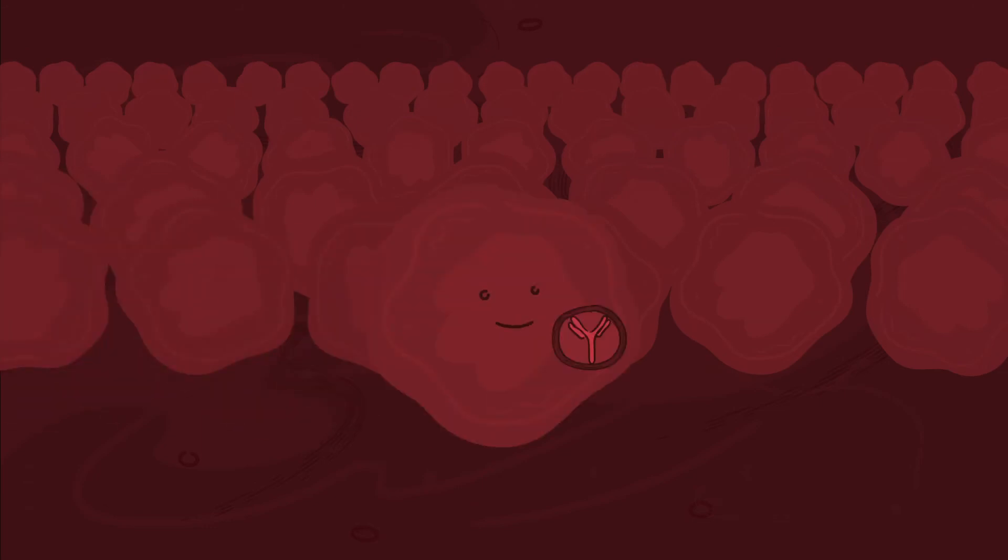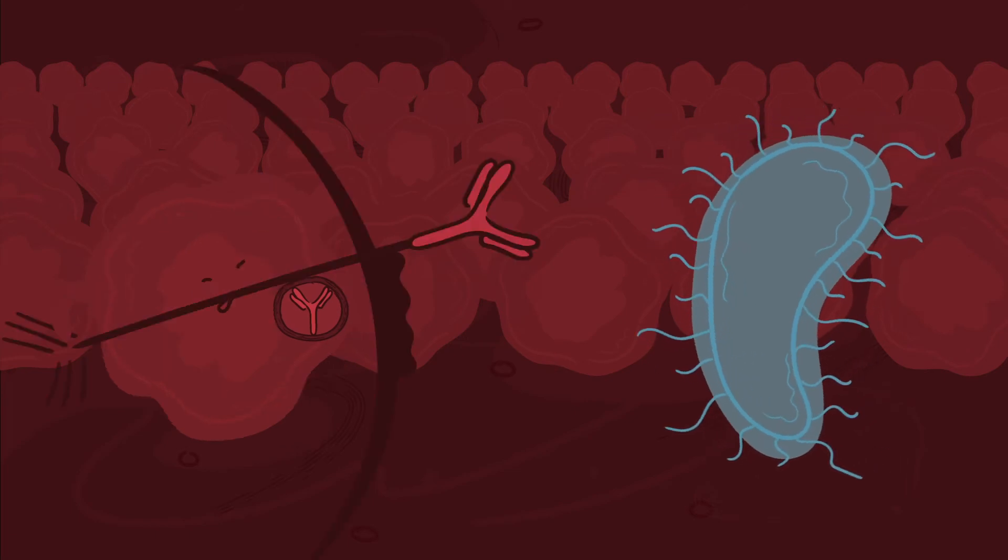Each B-cell expresses a unique antigen-binding receptor on its membrane. When the receptor recognizes an antigen, the cell starts producing antibodies that are also designed to bind that antigen.